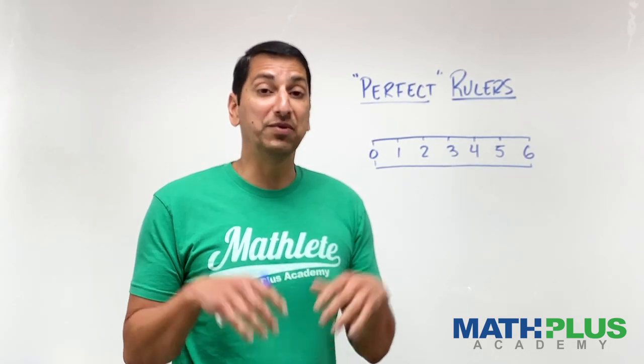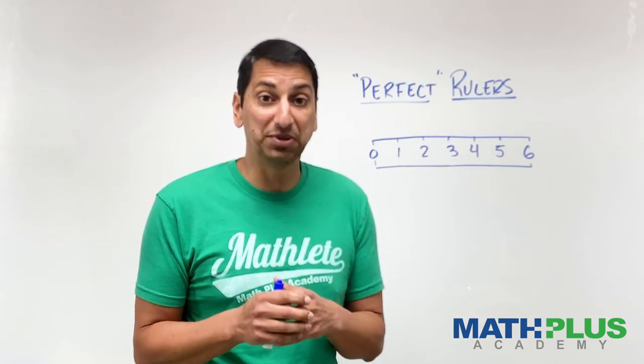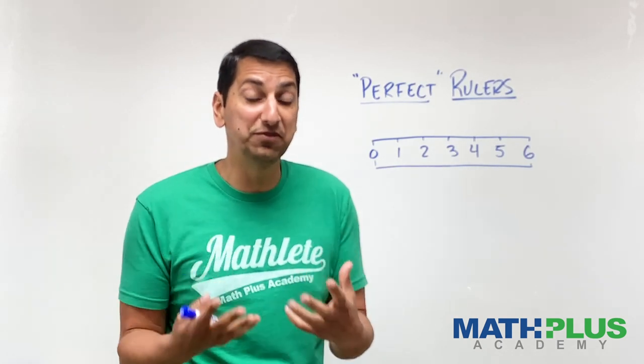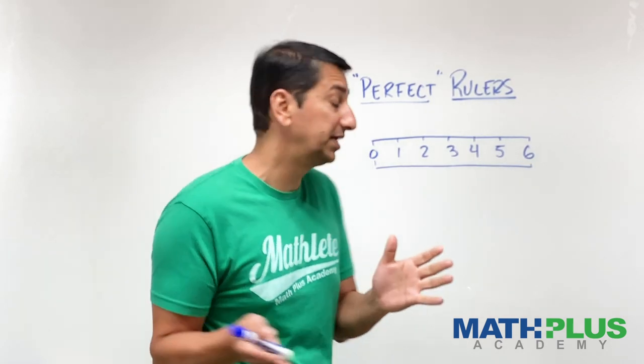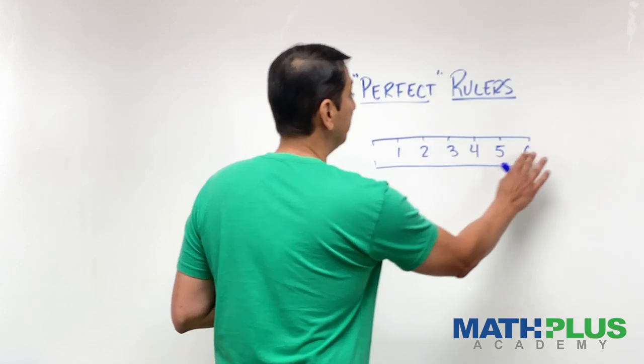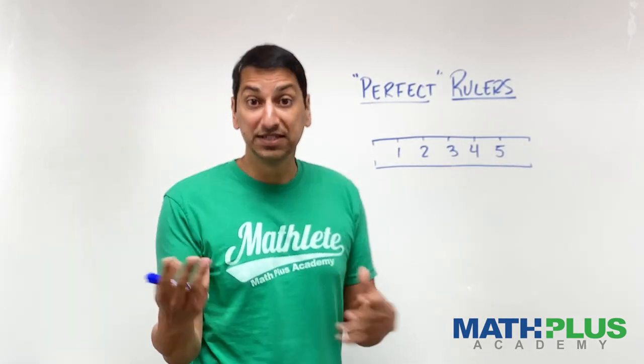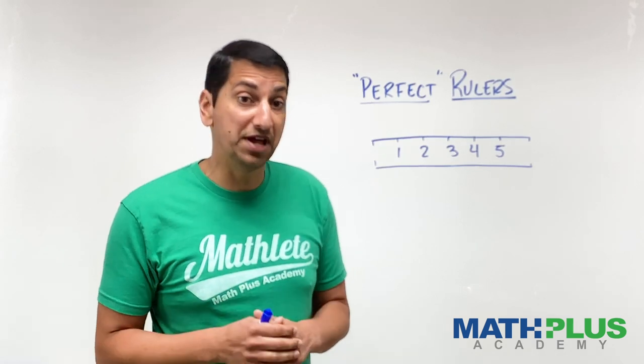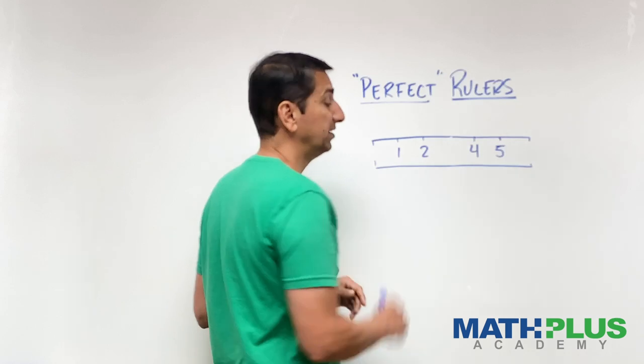Now imagine a world where we have to make millions of these rulers and ink is in short supply. So we want to save ink by removing some of the marks. Well, clearly I could get rid of the zero and the six because those are sort of implied. I already know it's a six inch ruler. I don't need those. Save some ink. Could I get rid of another mark? Let's see. What if I get rid of the three?